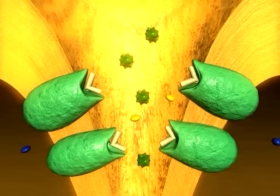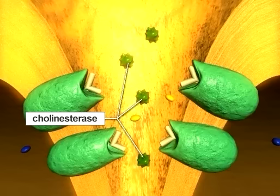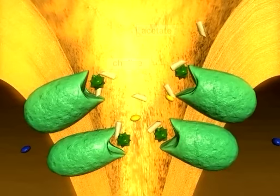Acetylcholine is then split to acetate and choline by cholinesterase, resulting in inactivation and closure of the channel.